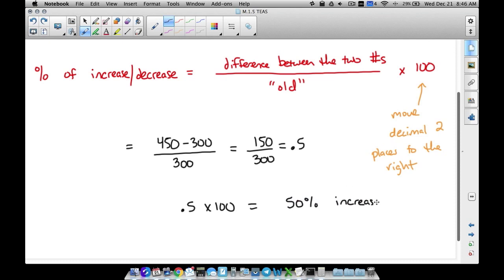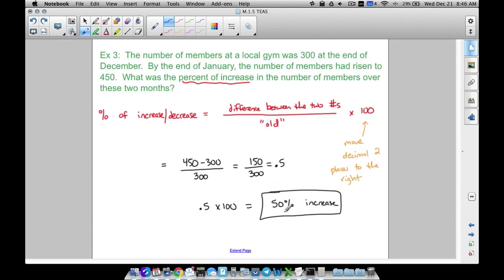There was a 50% increase in the number of members that joined this gym. And that's a nice number for us to kind of talk about this a little bit more to make you understand this on a different level. What is half of 300? What is 50% of 300? Same thing, same question. 50% of 300? 150. Half of 300? 150. Well, that's exactly how much this thing went up by. It went up by 150 members, which means we went up 50% of what it originally was. And that's what we're really finding here when we do a percent of increase or decrease problem.